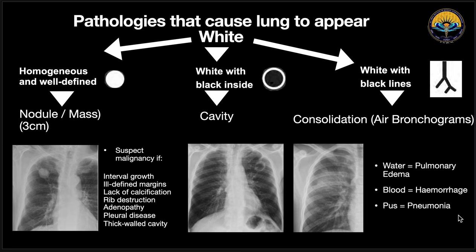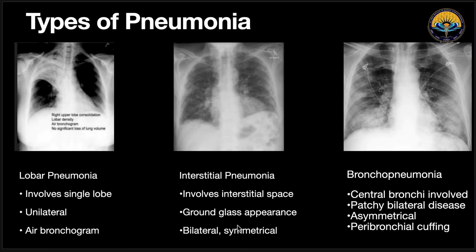There are three main types of pneumonia: lobar pneumonia, interstitial pneumonia, and bronchopneumonia. Lobar pneumonia means there is involvement of a single lobe of a lung, and it is usually unilateral. We can see whitening or opacification of the right upper lobe, and within this upper lobe we can also see some blackness inside — these are air bronchograms — suggesting that it is a consolidated right upper lobe.